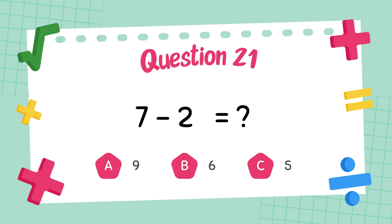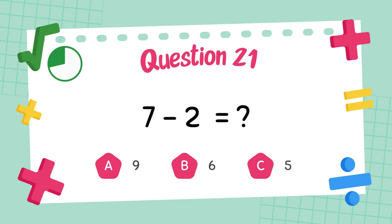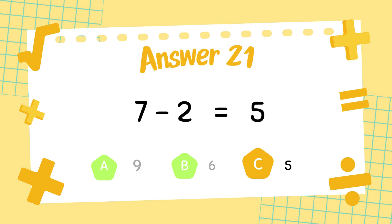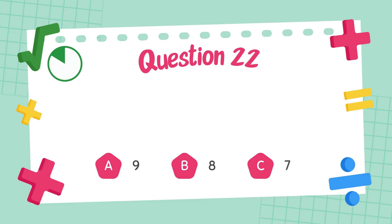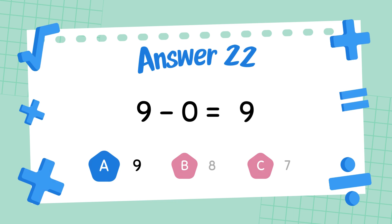What is 7 minus 2? The answer is 5. What is 9 minus 0? The answer is 9.